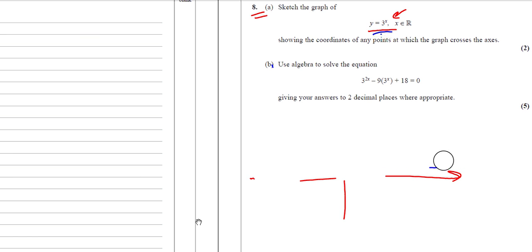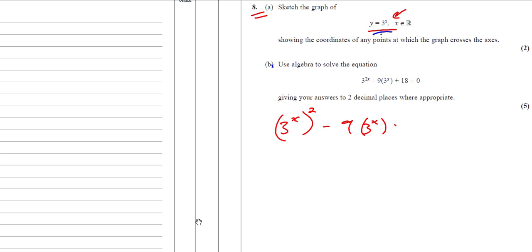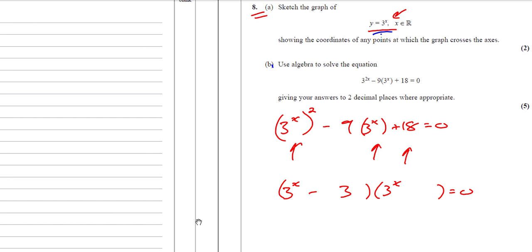Now have a look at question B. We've got 3^(2x) — which we've already said is the same as (3^x)² — minus 9 lots of 3^x plus 18 = 0. It's a quadratic because we've got something squared, minus 9 lots of something, plus 18 = 0. Factorising: using 3^x in place of x, we get (3^x − 3)(3^x − 6) = 0. So our two solutions are 3^x = 3 and 3^x = 6. But that's not what we're after — we haven't solved for x yet.